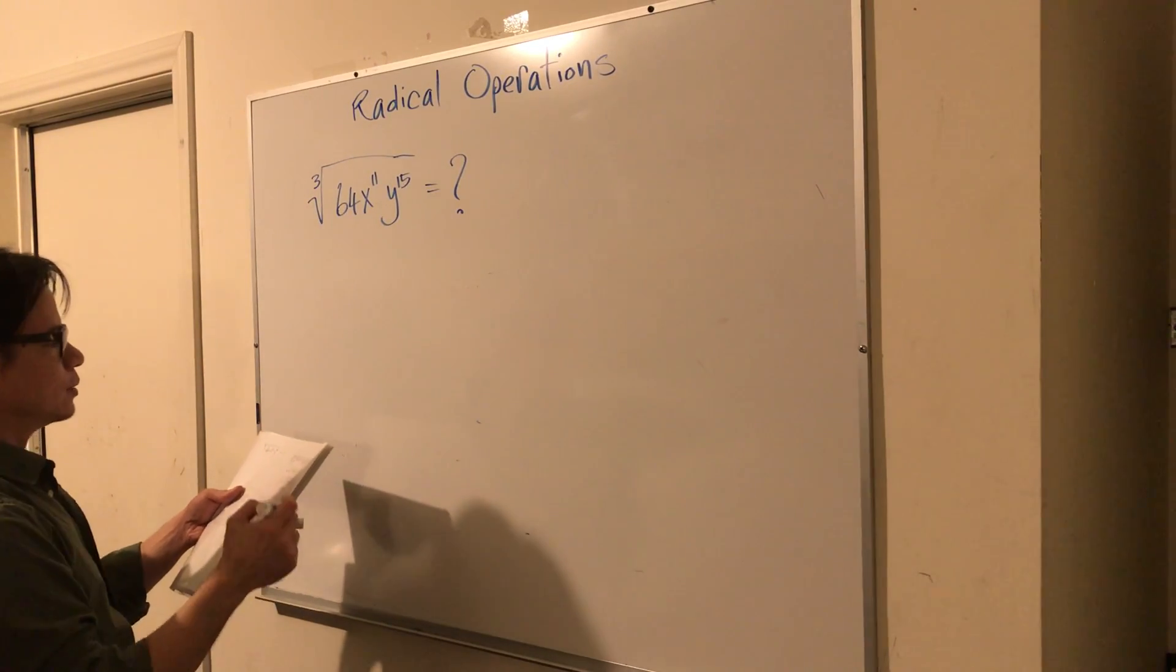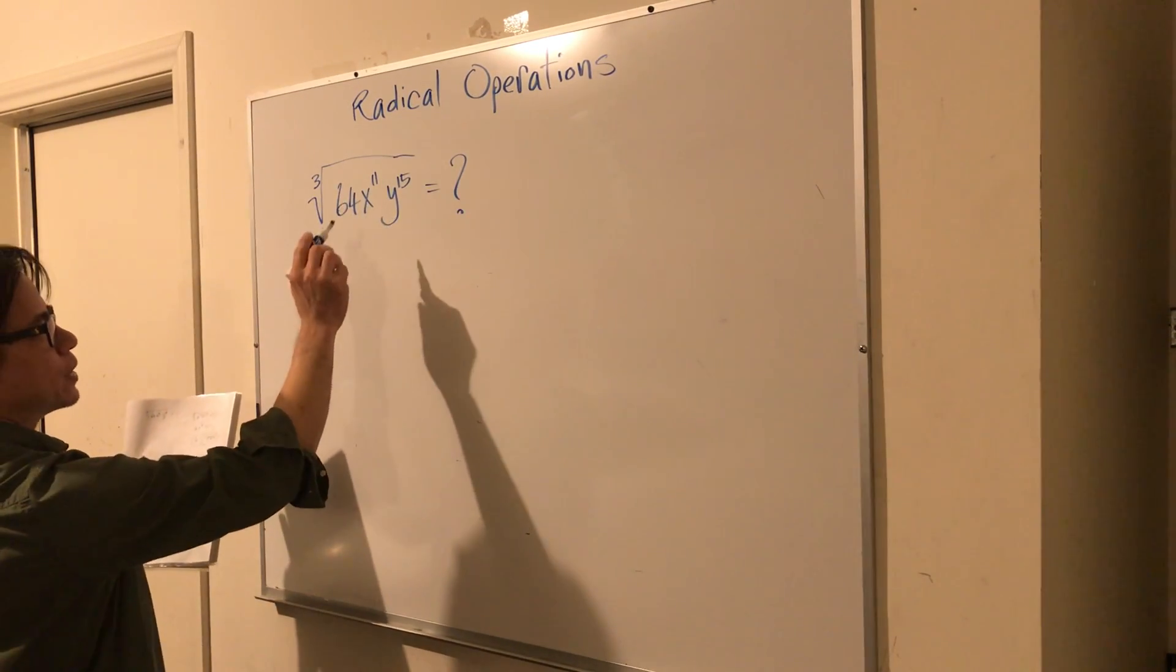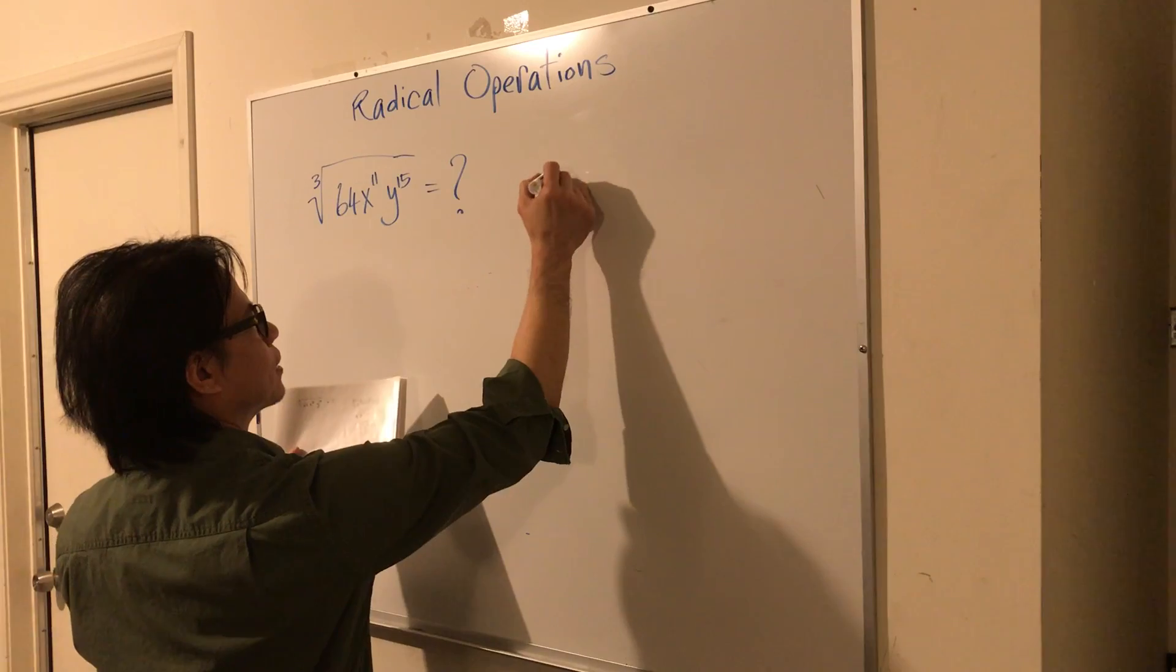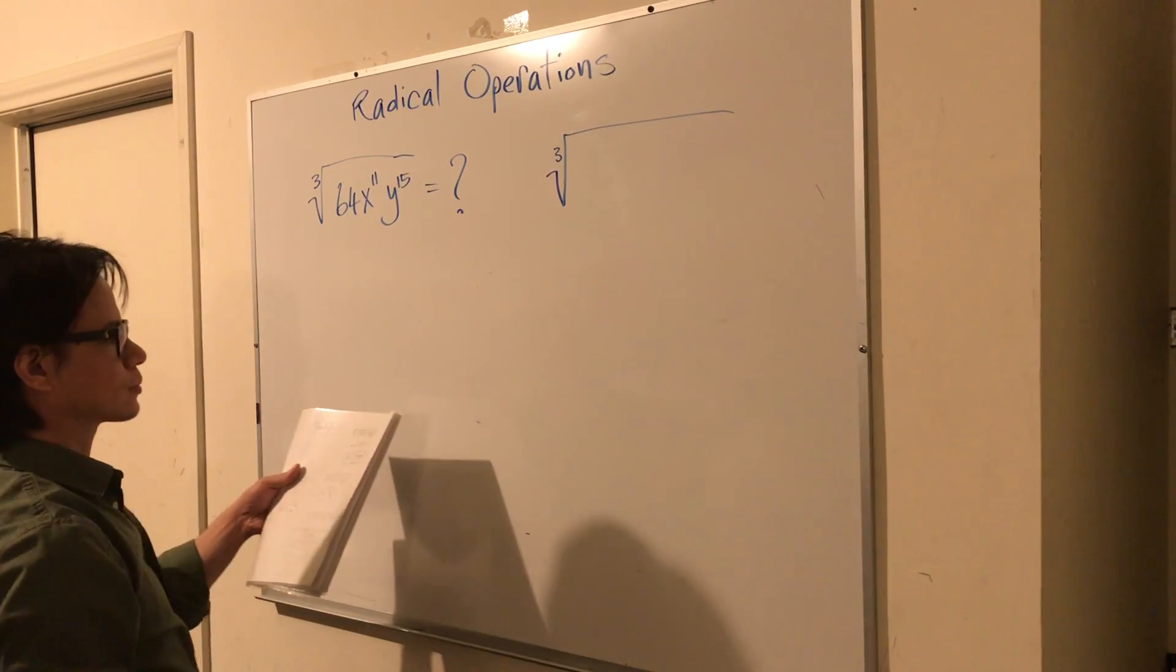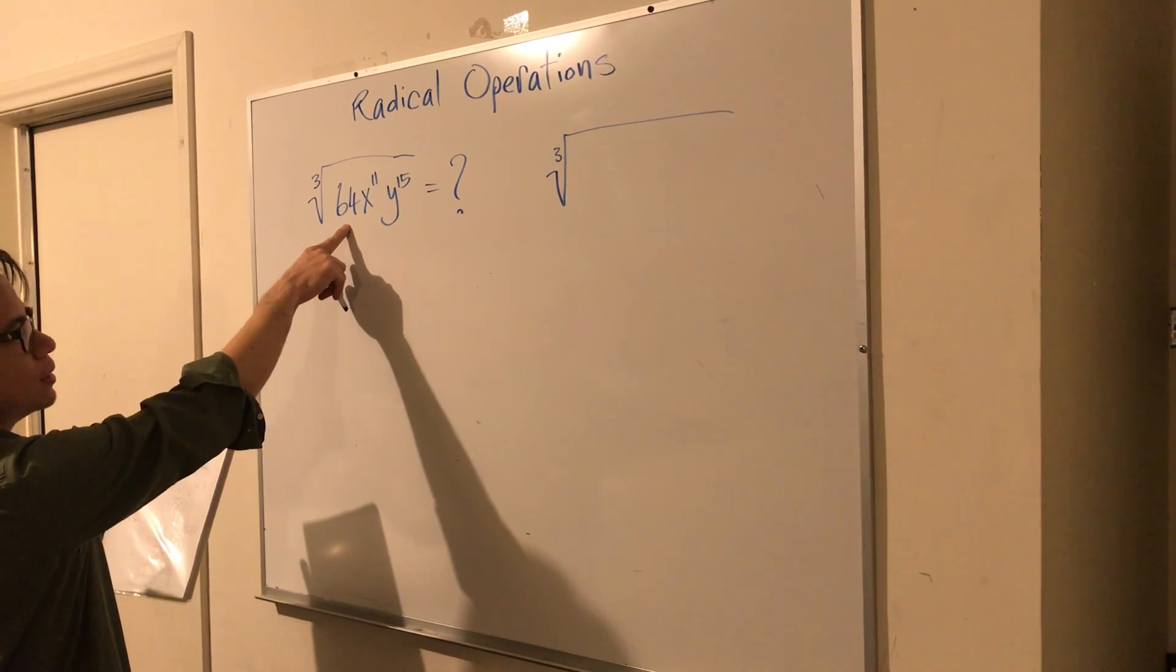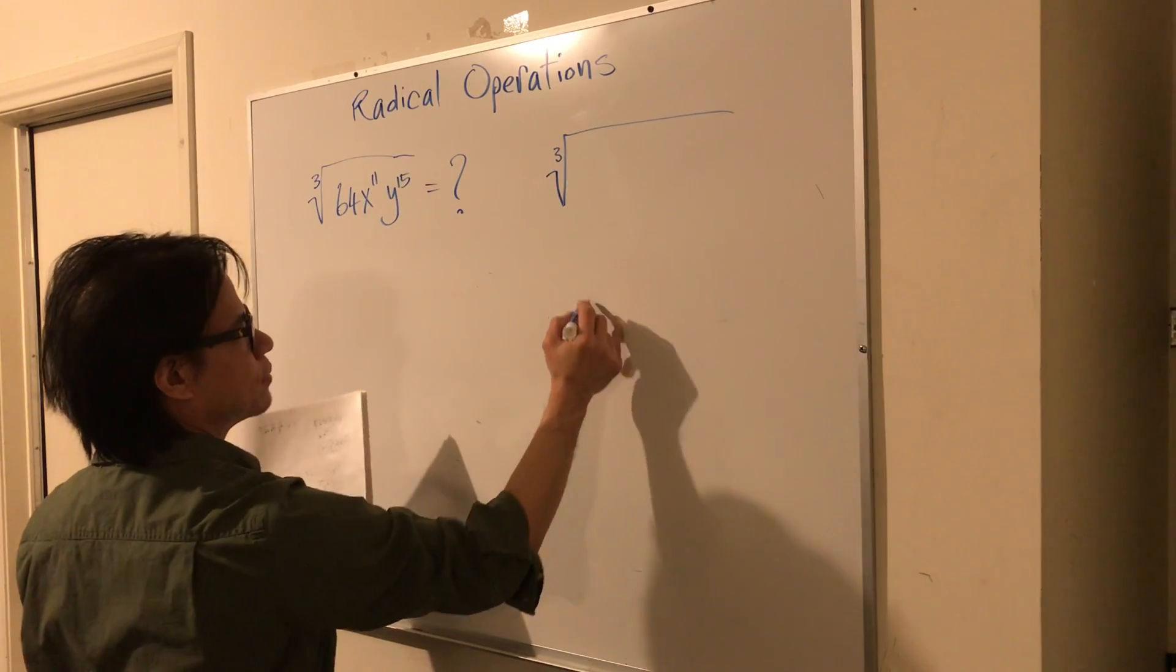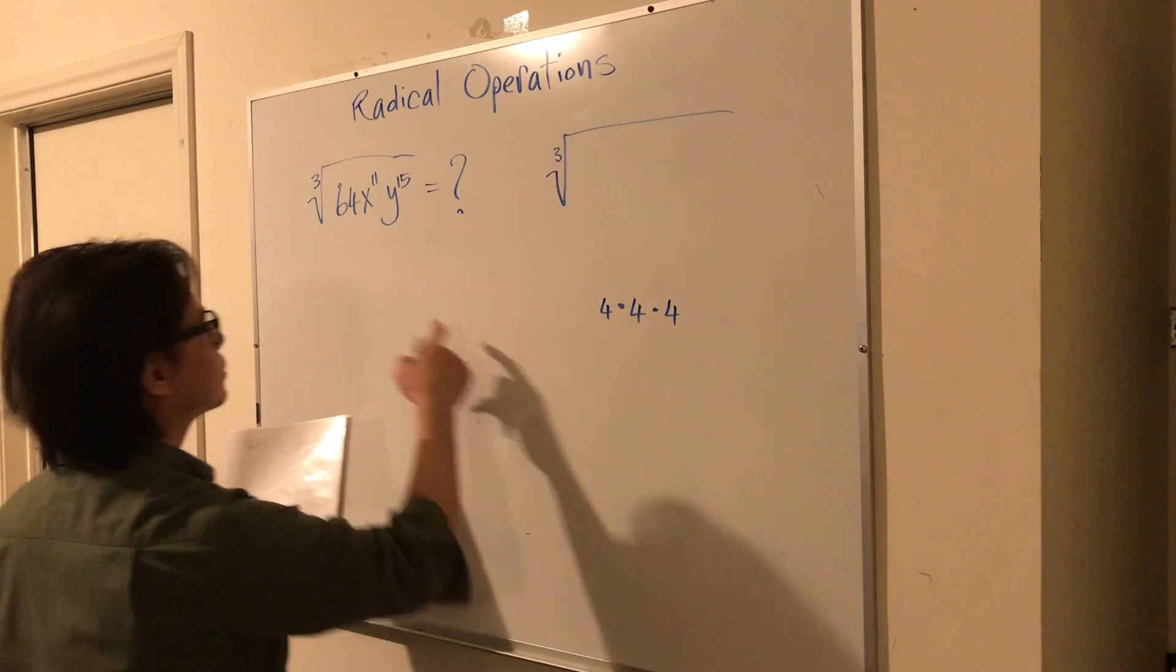So we're going to see if we can get these guys down to the third power. We have to be very careful and ask ourselves if we can get this to the third power. So it's like trial and error here. If you say 4 times 4 is 16 times 4, you would get 64.